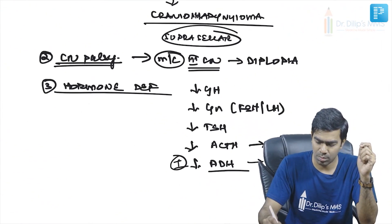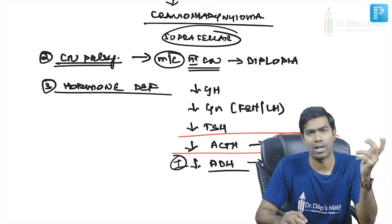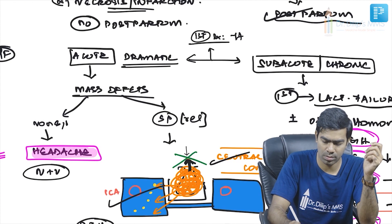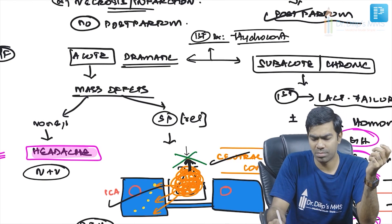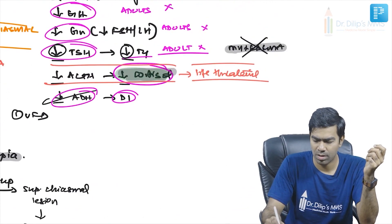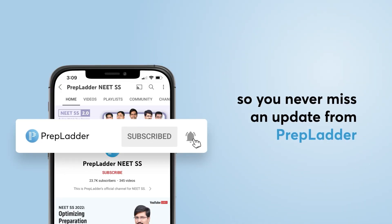In both apoplexy and Sheehan syndrome, the most important hormone is cortisol. Patients without cortisol are prone to shock during stress states. Therefore, the first hormone to be replaced — whatever the cause of hypopituitarism — is hydrocortisone, the pharmacological form of cortisol, given as a tablet or injection. This replaces the deficient cortisol, not to reduce inflammation.